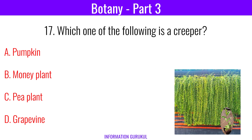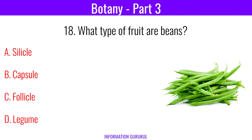Which one of the following is a creeper? Pumpkin. What type of fruit are beans? Legume.